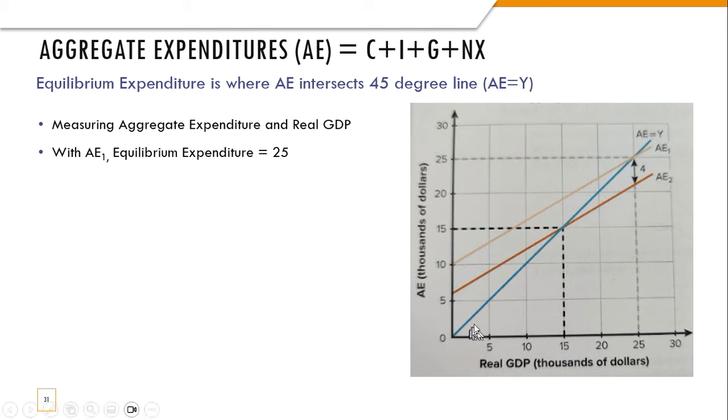If we look at this graph, we're going to have this 45-degree line here. This is a 90-degree angle for the graph, and then we're just bisecting it, cutting it in half. That's representing all points where aggregate expenditure equals real GDP, and in this case we're denoting real GDP with Y.